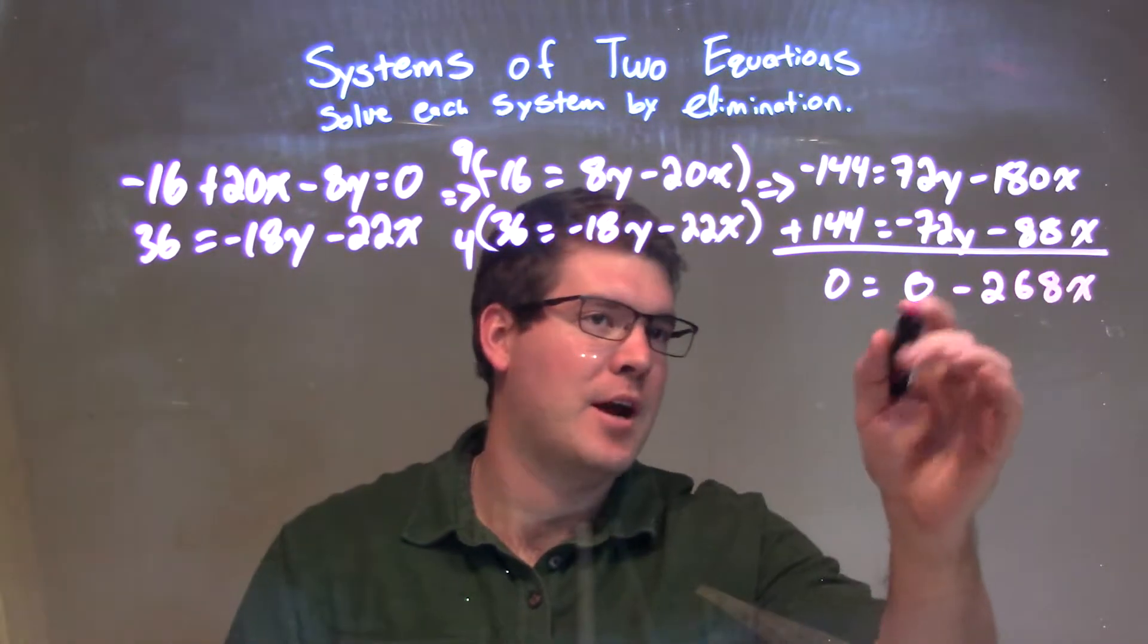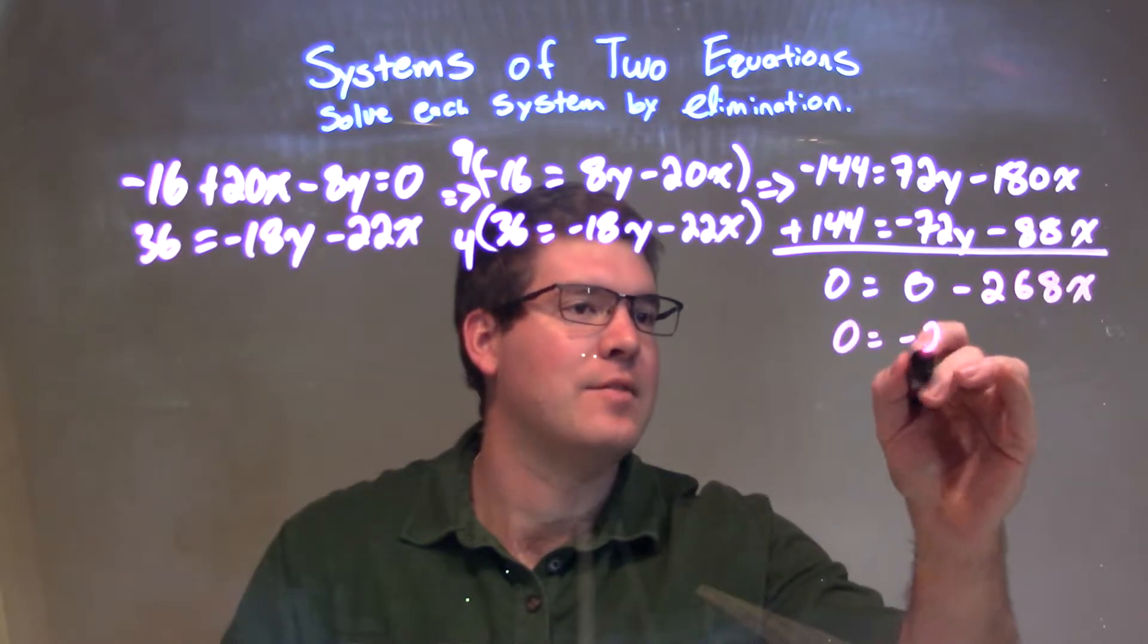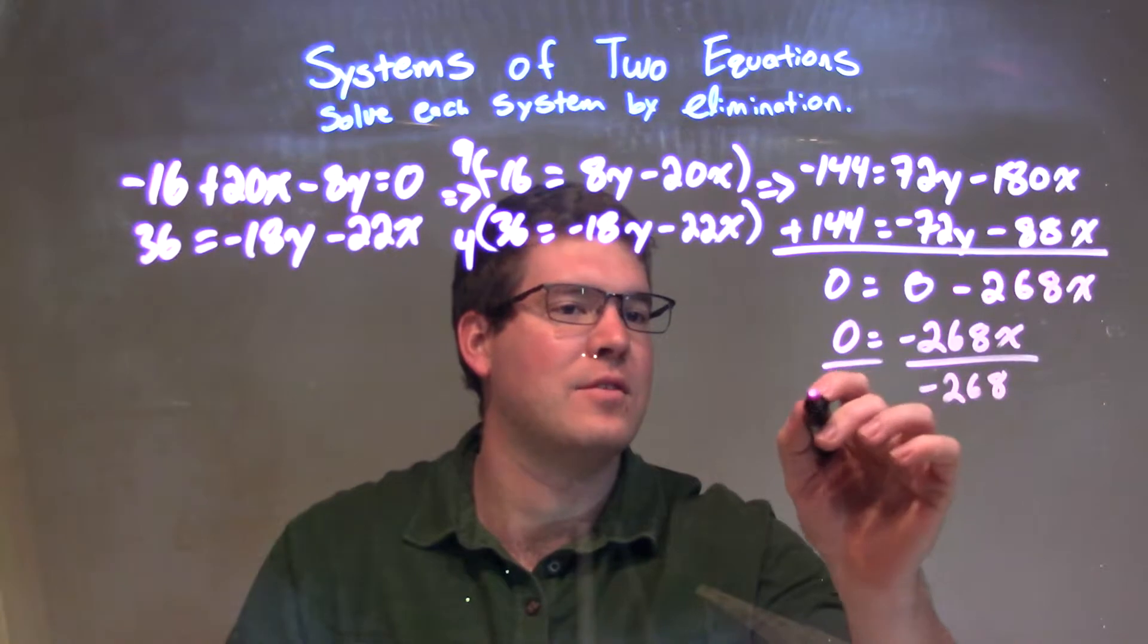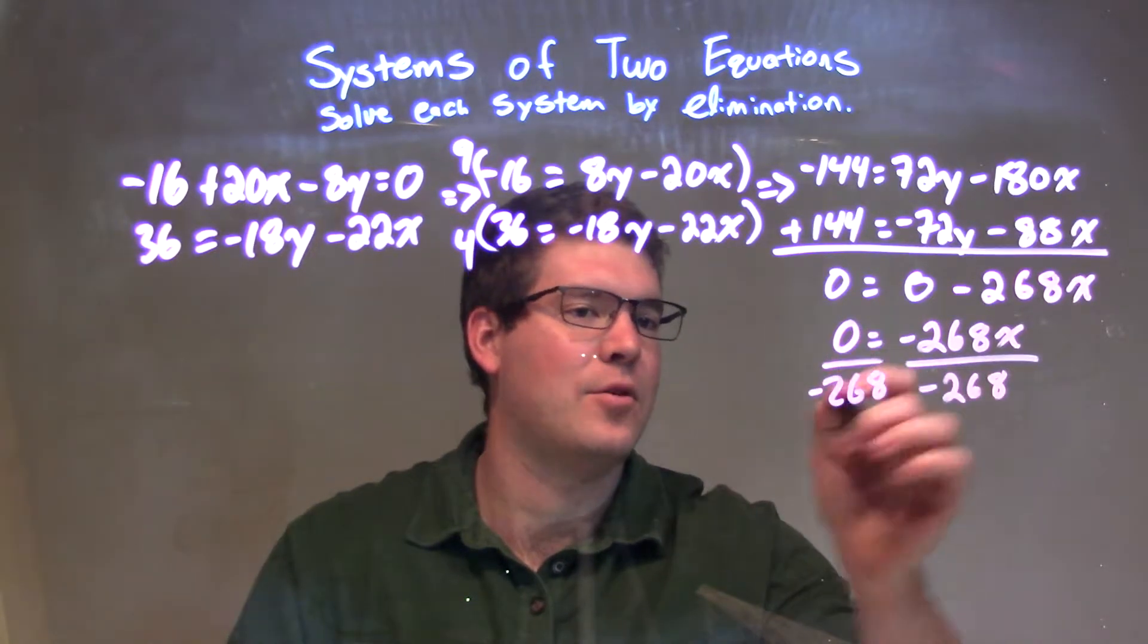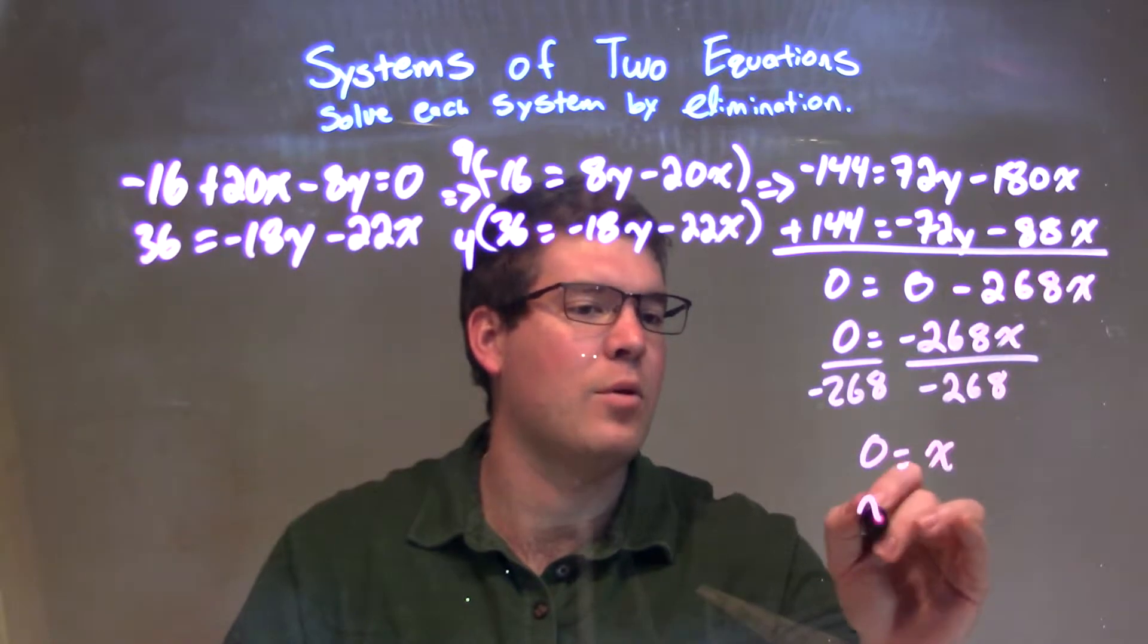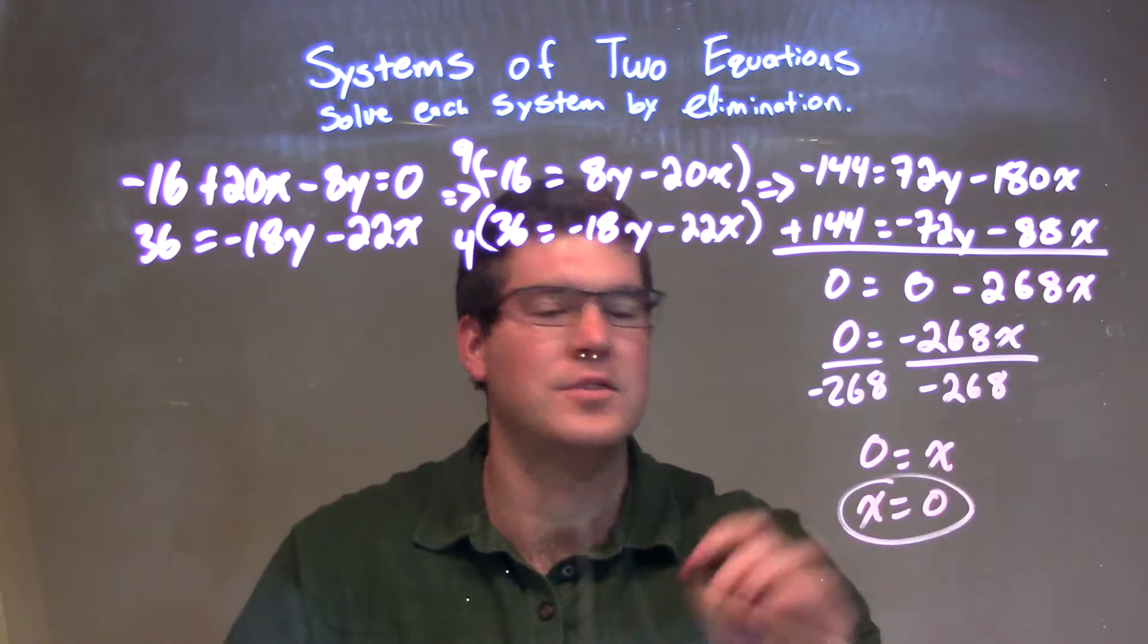So, from there, we don't really care about this 0. So, 0 equals negative 268x. I divide by negative 268 to both sides. And 0 divided by negative 268 is just 0. So, x is just 0.